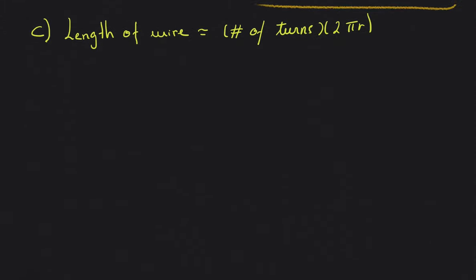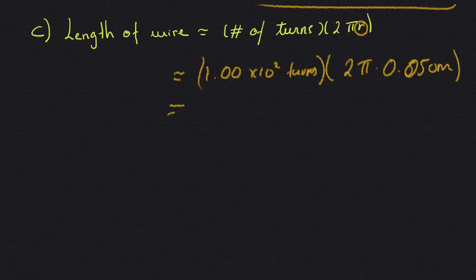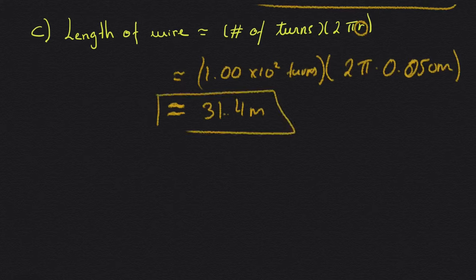The last part is an approximation. The length of the wire is approximately the number of turns times 2πR: 100 turns × 2π × 0.050 m ≈ 31.4 meters. This has been a longer video covering the material for questions 5, 6, and 7 and their equivalent problems. If you have any questions, write them in the comments or send an email.